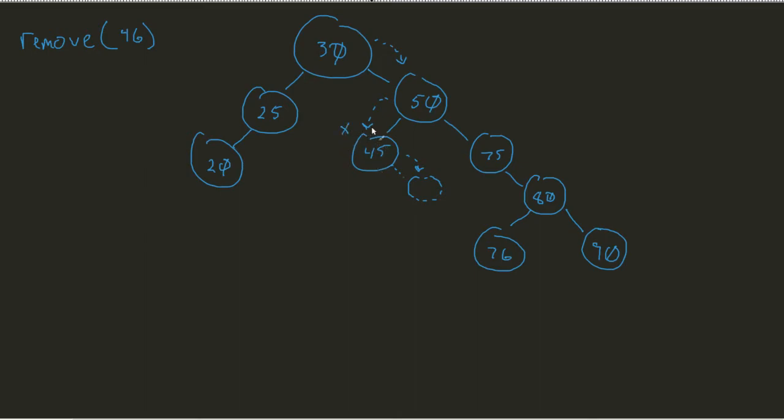Well, that means we happen to have some X, some Y, and some Z. Now you notice that in this situation, we are dealing with a zigzag structure. And as a result, we use trinode restructuring.